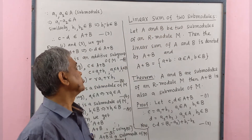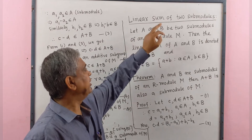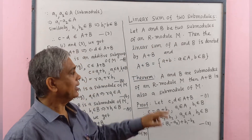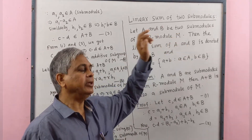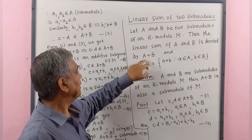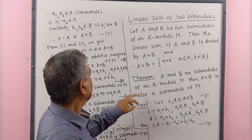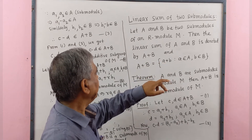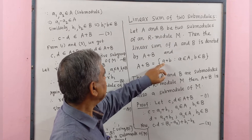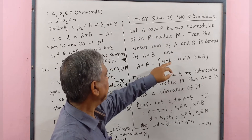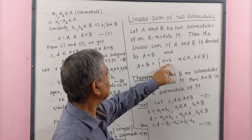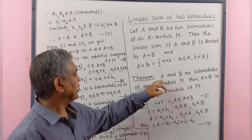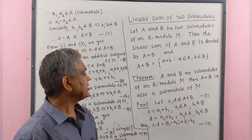We define the linear sum of two submodules. Let A and B be two submodules of an R-module M. Then the linear sum of A and B is denoted by A plus B, and defined as the set containing elements of the form small a plus small b, where small a belongs to capital A and small b belongs to capital B.